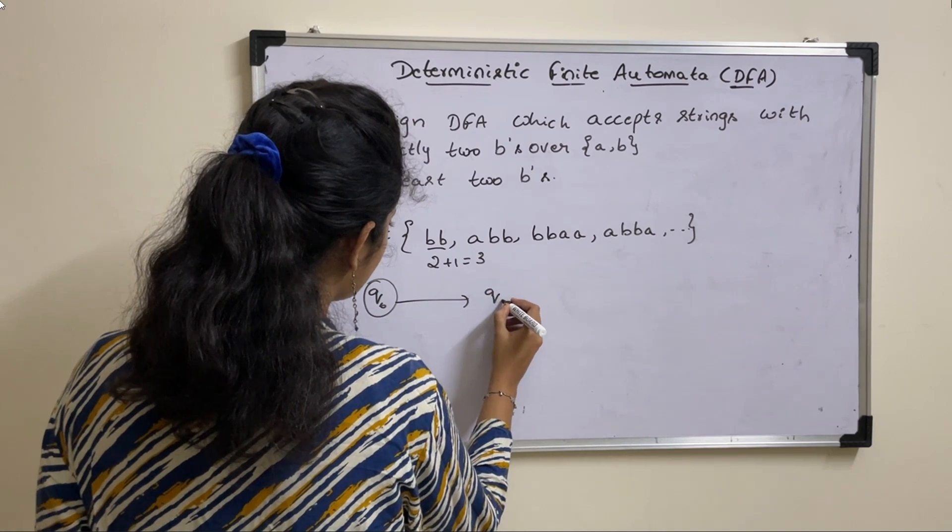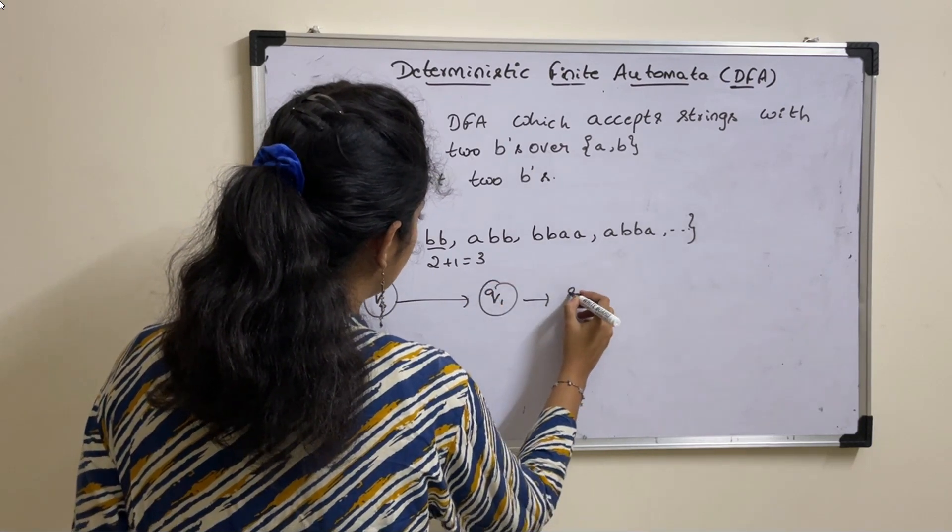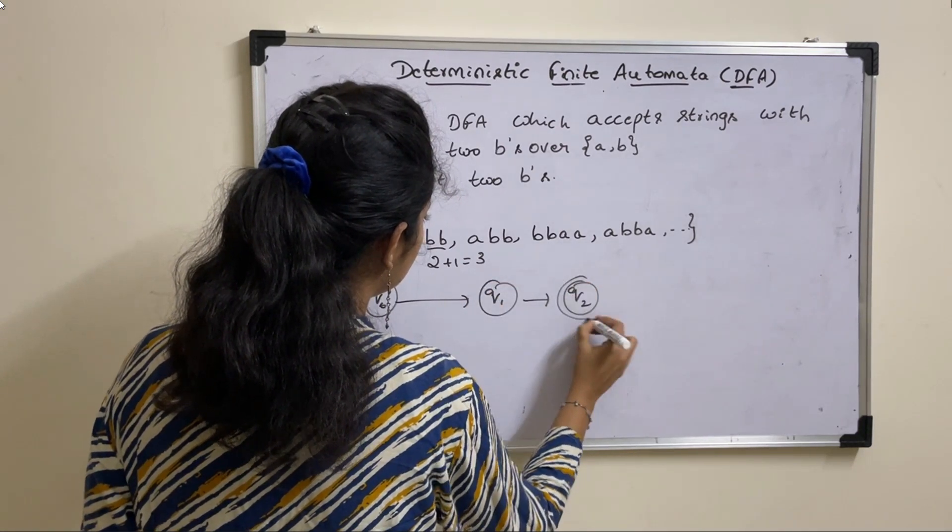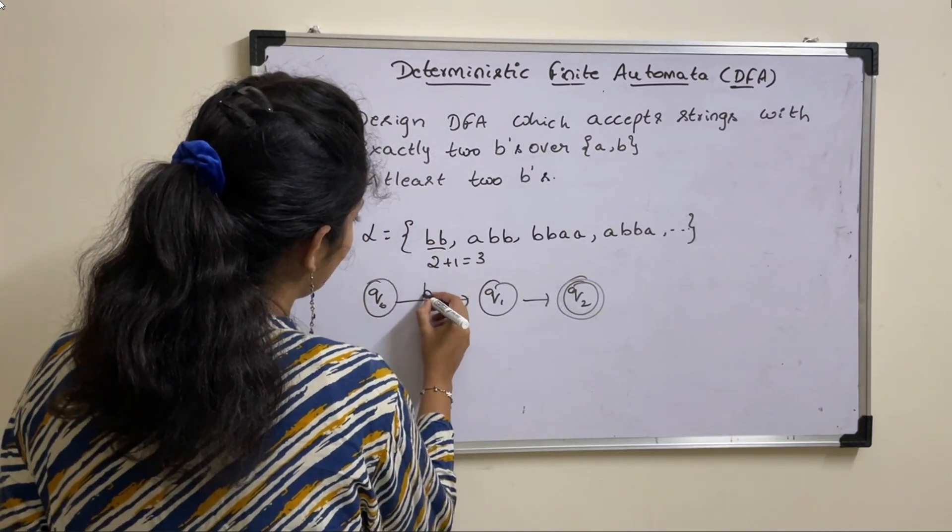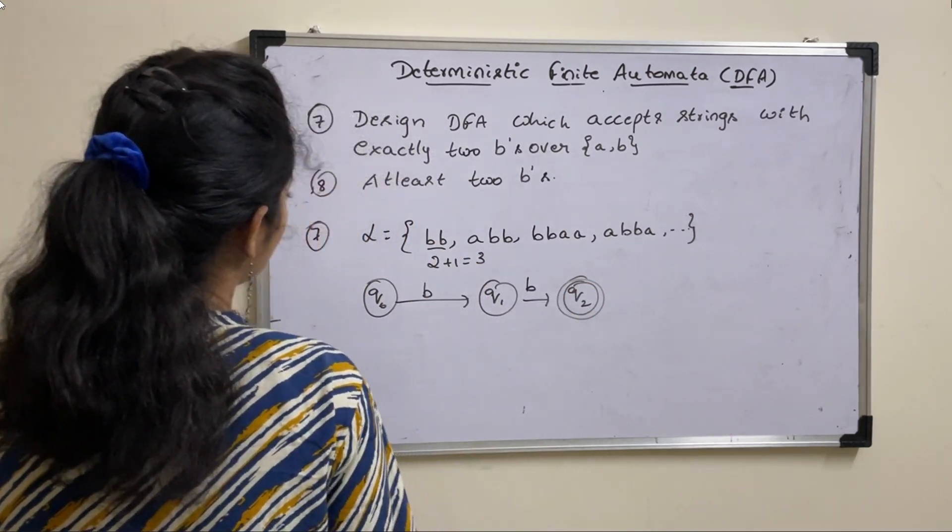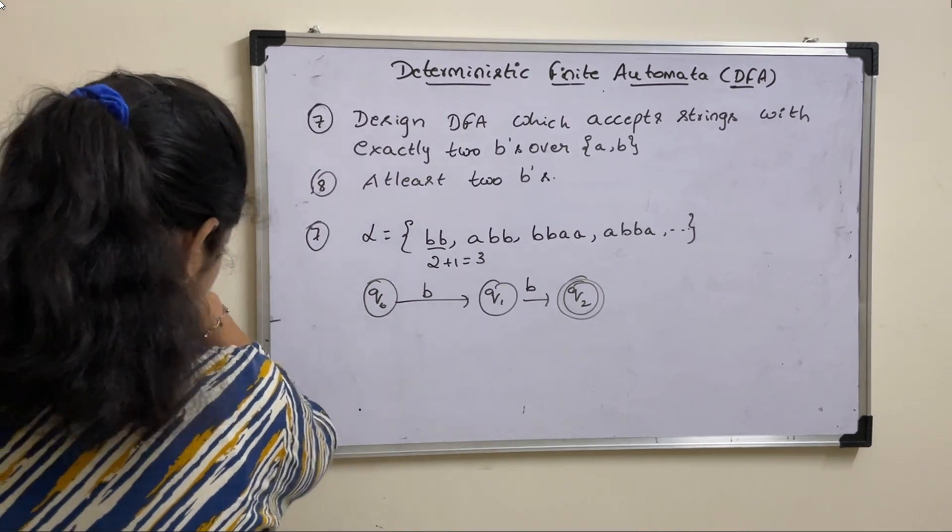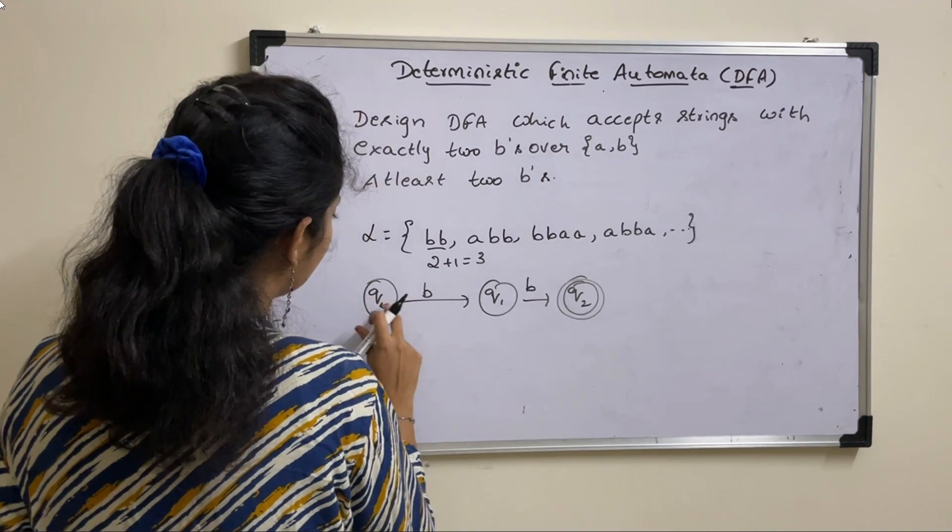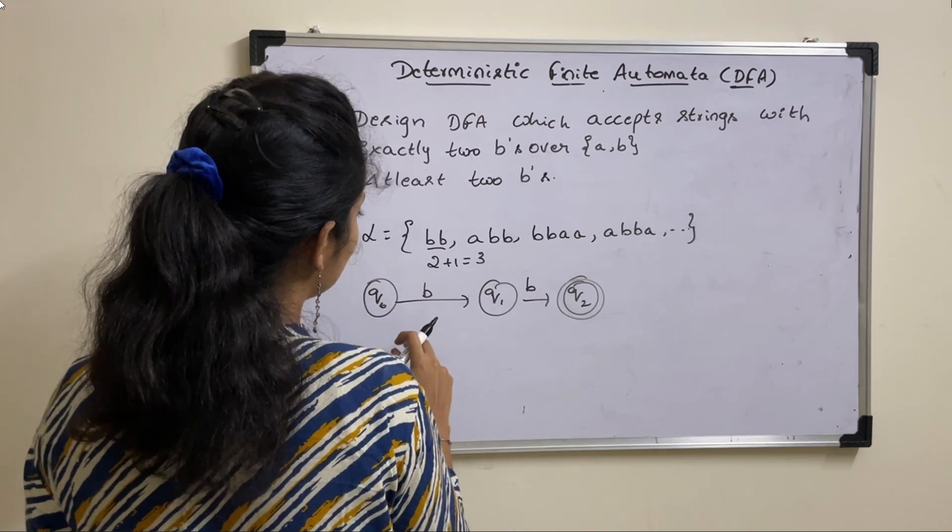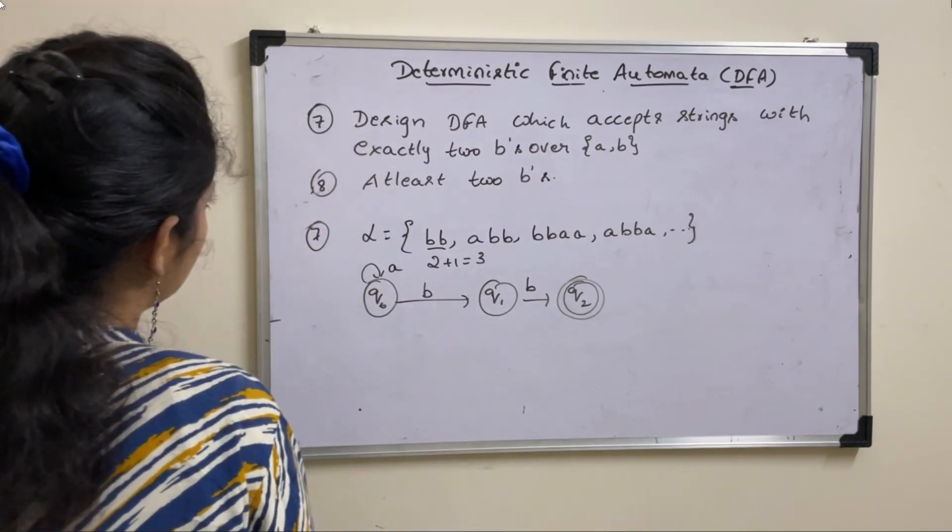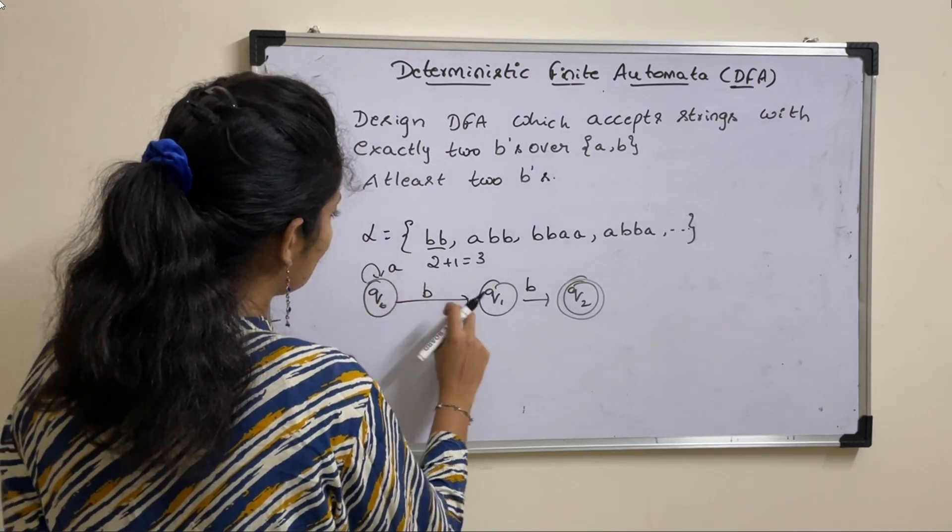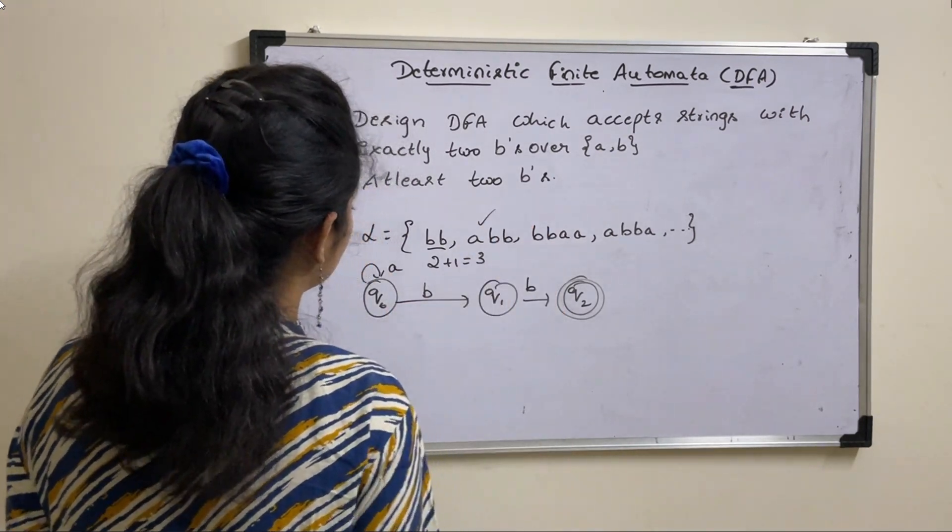So take three states: Q0, Q1, Q2. Q2 is your final state. Now take this BB. Here we apply input symbol B on Q0. Now apply input symbol A. So can we use it as self loop? Yes. So now string generated is ABB, which is allowed.